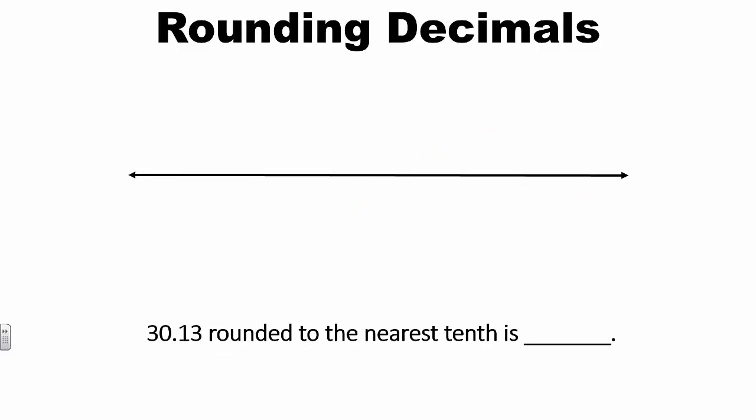Now let's round the number 30 and 13 hundredths to the nearest tenth. I need to determine where 30 and 13 hundredths is located on the number line. I know that 30 and 13 hundredths is located between 30 and 1 tenths and 30 and 2 tenths, and the midpoint between these two numbers is 30 and 15 hundredths. Because 30 and 13 hundredths is less than the midpoint, 30 and 13 hundredths rounded to the nearest tenth is 30 and 1 tenth.